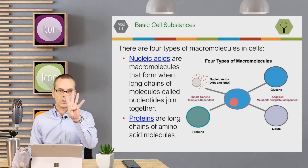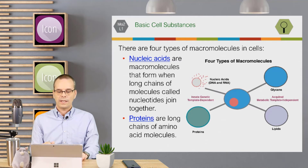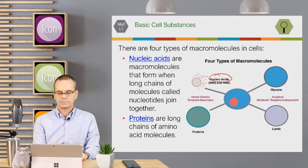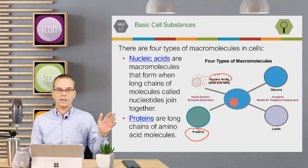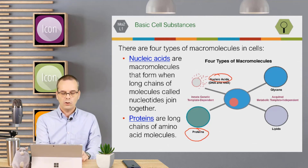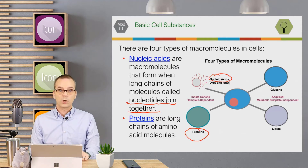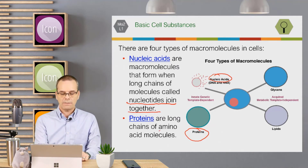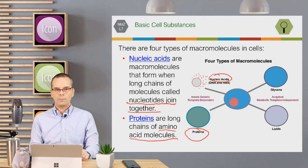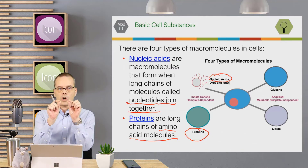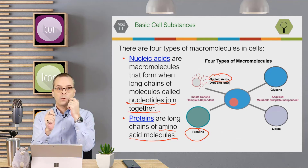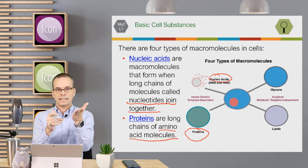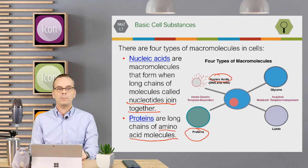There are four types of macromolecules. They are nucleic acids and proteins. Nucleic acids are macromolecules that are long chains of nucleotides joined together. Proteins are long chains of amino acid molecules. It's all these small molecules coming together in a chain — each type has different molecules: nucleic acid has nucleotides, and proteins have amino acids.